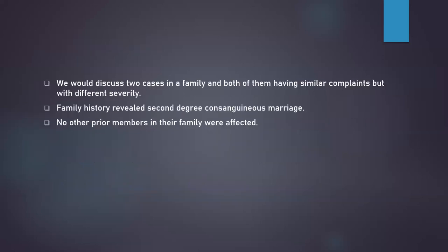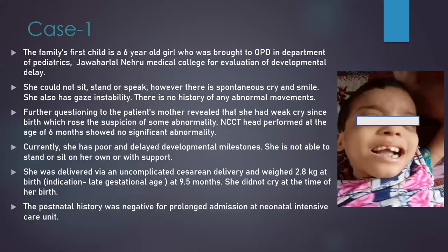In this presentation, we will discuss two cases in a family, both of them having similar complaints but with different severity. Family history revealed second-degree consanguineous marriage. No other prior members in the family were affected. My first case is a six-year-old child who was brought to OPD in the Department of Pediatrics, Jawaharlal Nehru Medical College, for evaluation of developmental delay.